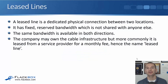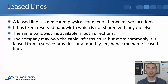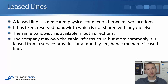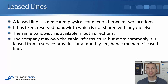In this lecture, you'll learn about leased lines. A leased line is a dedicated physical connection between two locations. It has fixed reserved bandwidth which is not shared with anyone else, and the same bandwidth is available in both directions. So if you've got a 2 meg leased line for your internet connection, you've got 2 meg going up and 2 meg coming down — different from options like some versions of DSL. The company may own the cable infrastructure themselves, but far more commonly it's leased from a service provider for a monthly fee. That's where we get the name leased line from.